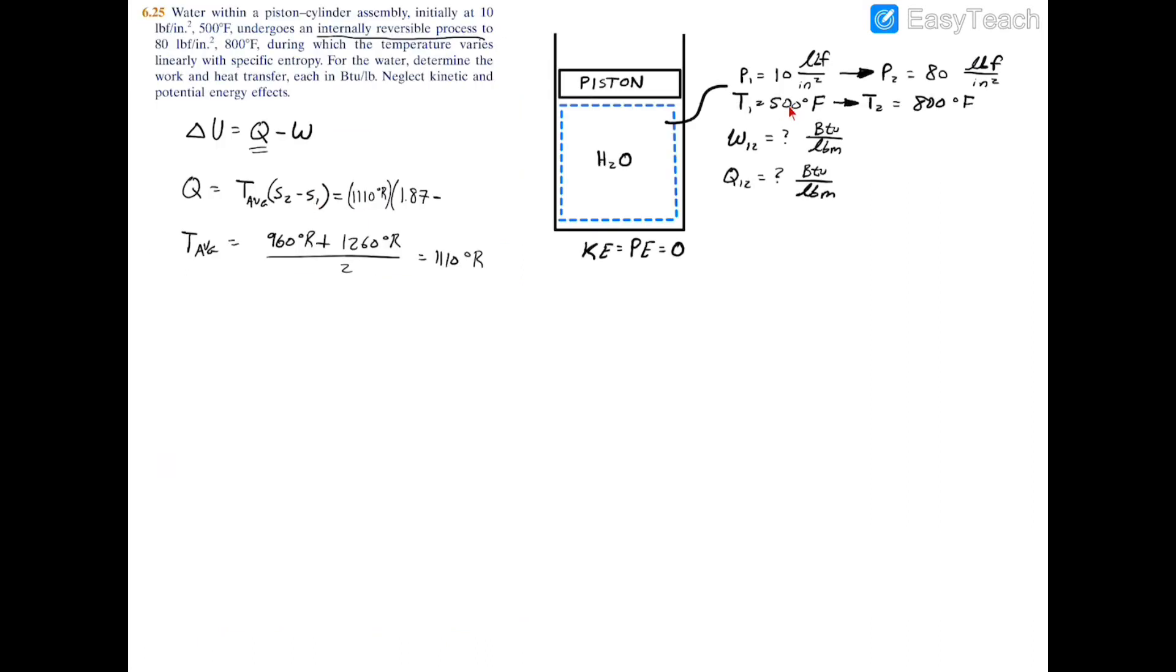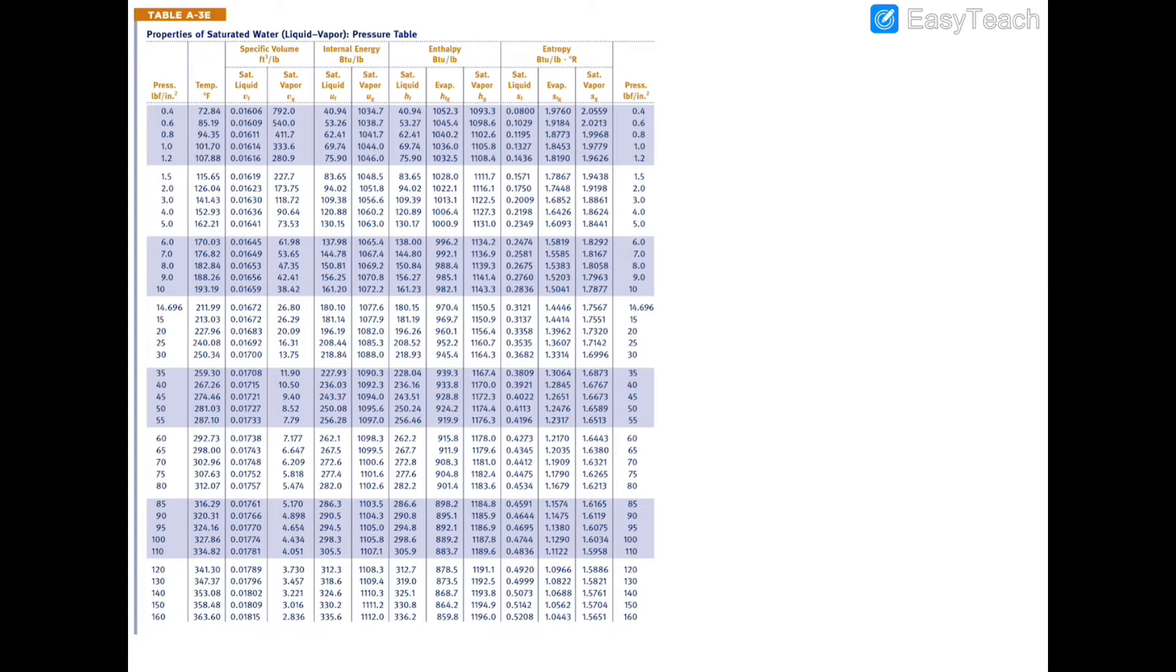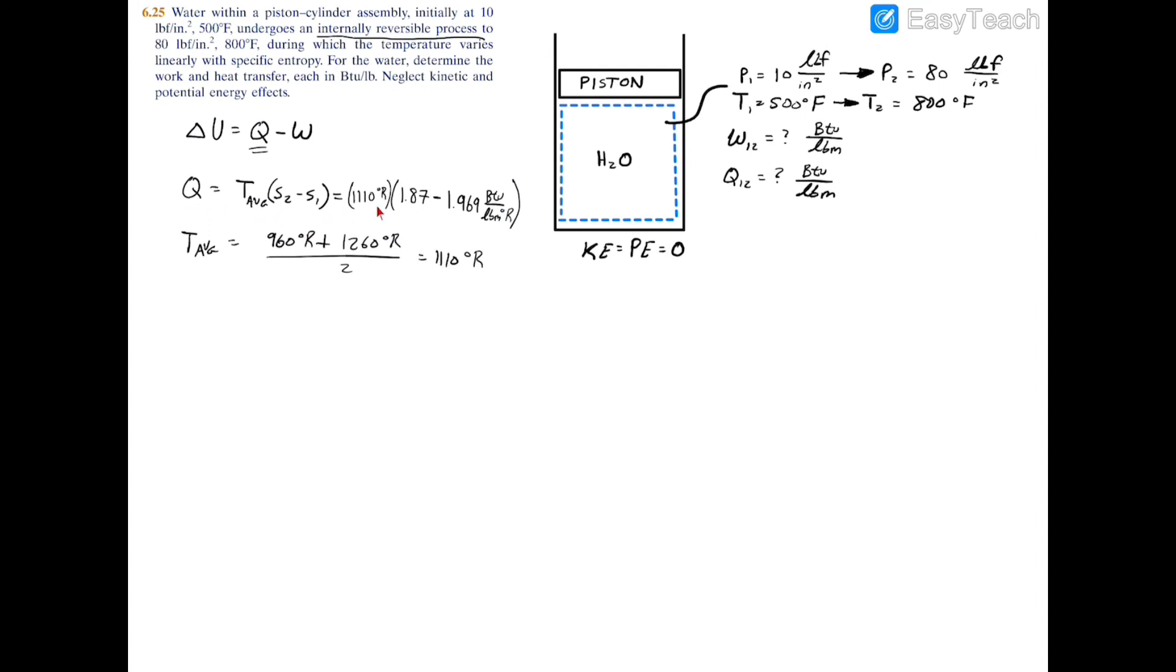Now to find s1 at 500 degrees Fahrenheit and 10 psi, we'll turn to the saturated table. At 10 psi we have a saturation temperature of 193 Fahrenheit. We were at 500, which is way higher than this. If we turn to Table A4E, we have 10 psi and 500 Fahrenheit, and we have a specific entropy of 1.969 BTU per pound degree Rankine.